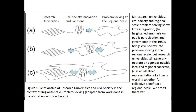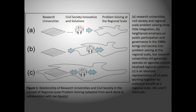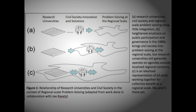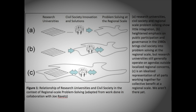This slide illustrates the relationship of research universities and civil society in the context of regional scale problem solving, adapted from work done in collaboration with Joe Ravitz. Working from top to bottom: A – research universities, civil society, and regional scale problem solving show little integration; B – heightened emphasis on public participation and governance in the 1980s brought civil society into problem solving at the regional scale, but universities still generally operated on agendas outside localized regional concerns; and C – an idealized representation of all parts working together for collective benefit at a regional scale.